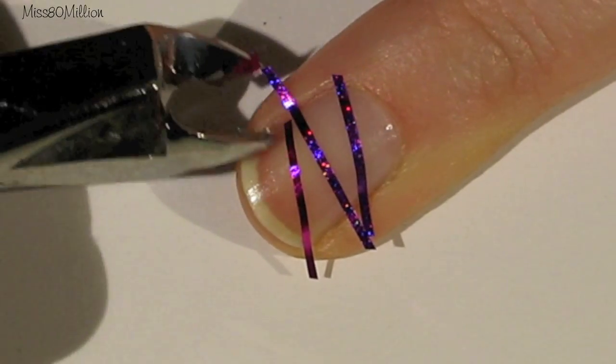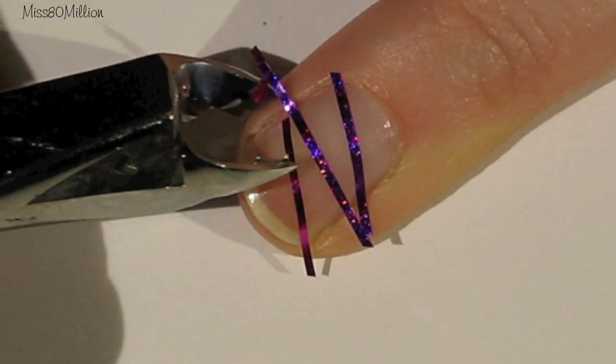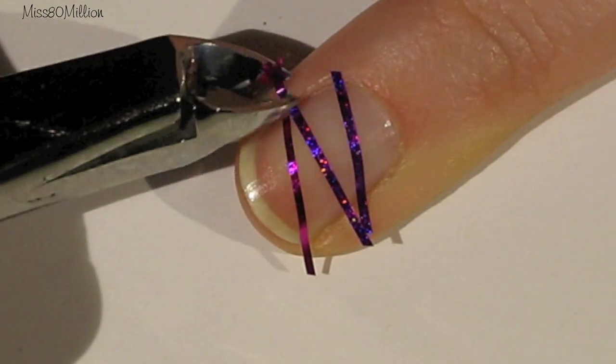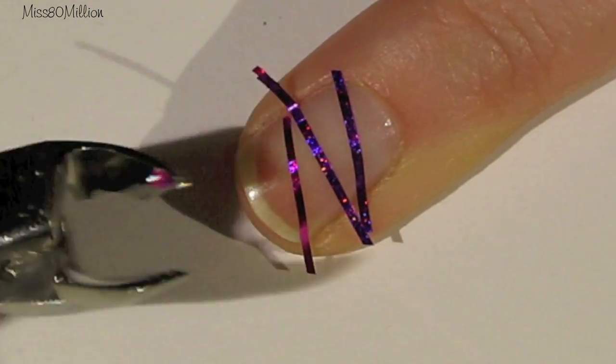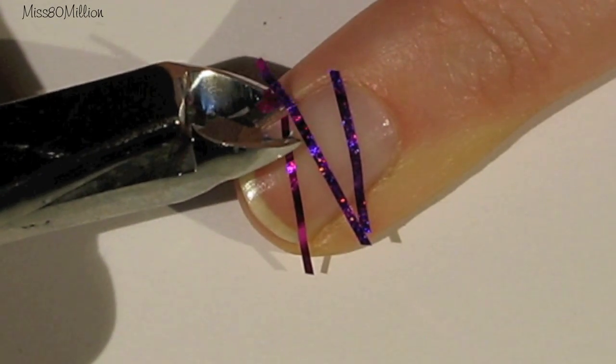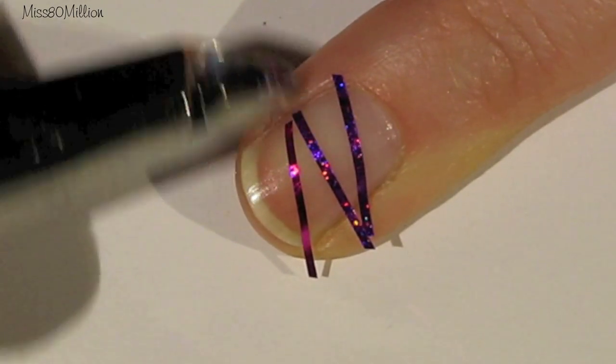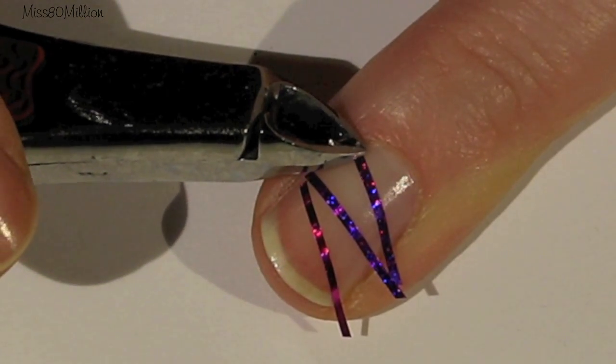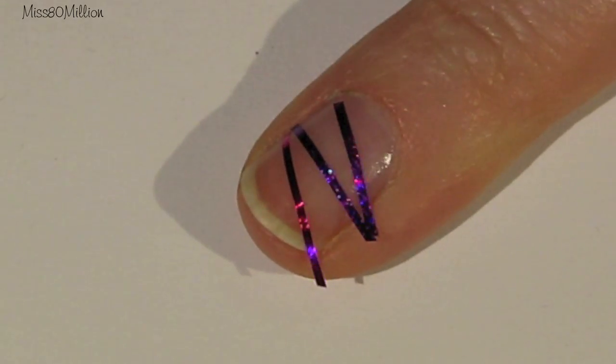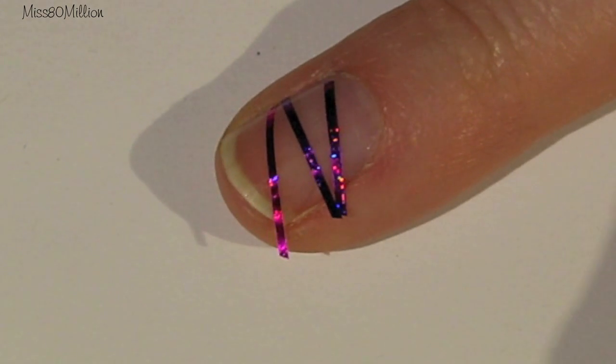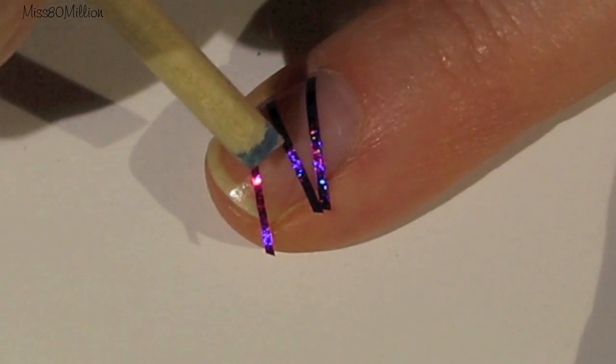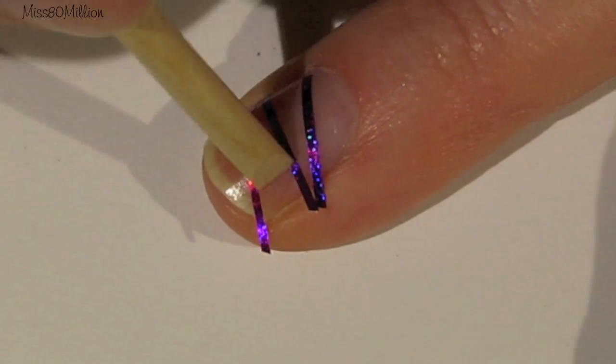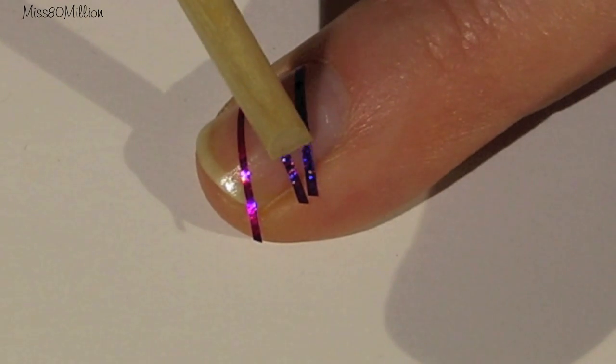So I'm just going to go in with my cuticle clipper again and just trim each of the pieces of the nail tape to the length that I actually want. And I'm just going to make sure I press it down. You can use your finger, I'm just using an orange wood stick, whatever you prefer, just to make sure it has good adhesion to my nail.